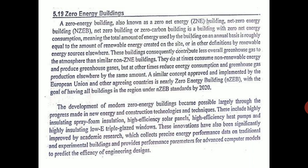A net zero building or zero carbon building means the total amount of energy used by the building on an annual basis is roughly equal to the amount of renewable energy created on the site, or in other definitions, by renewable energy sources elsewhere. Either you can have a solar plant or small wind turbines on the rooftop, or you can have them somewhere else, but ultimately the net energy consumed by the building is zero.